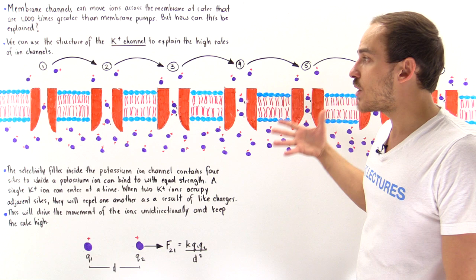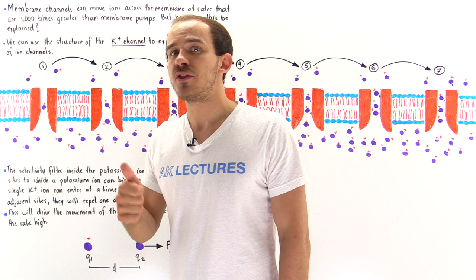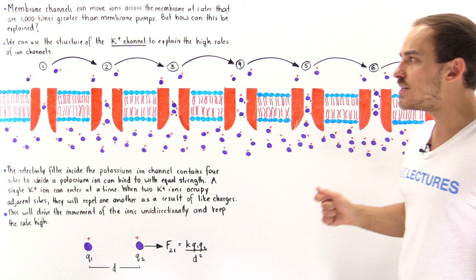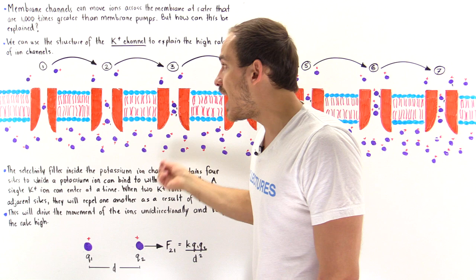Because of this electrostatic force, ion channels are not only effective in moving specific types of ions, but also very efficient. The rates at which they move ions are extremely high — in some cases so high that it is as if there is no barrier between the two sides of the membrane, as if the ions are simply diffusing across without the membrane being there at all.